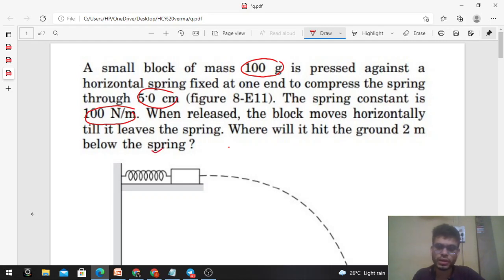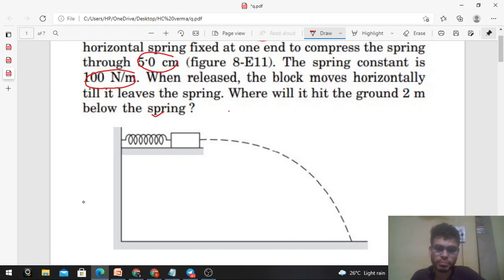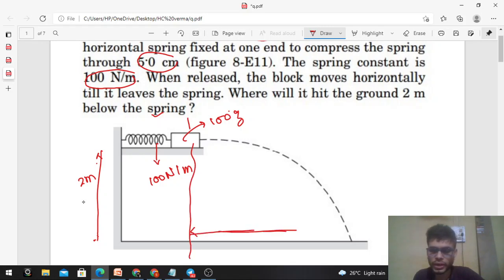So everything is given: mass of the block is 100 grams, spring constant is 100 newton per meter, height is 2 meters. You just have to find out the horizontal distance - how far will this block travel before hitting the ground. Let's say this is x, so you have to find out the value of x.